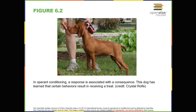Learning, like reflexes and instincts, allows an organism to adapt to its environment. But unlike instincts and reflexes, learned behaviors involve change and experience. Learning is a relatively permanent change in behavior or knowledge that results from experience. In contrast to innate behaviors, learning involves acquiring knowledge and skills through experience. Learning to surf, as well as any complex learning process such as learning about the discipline of psychology, involves a complex interaction of conscious and unconscious processes.